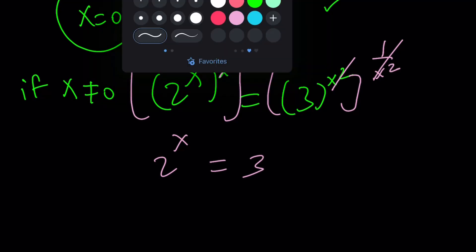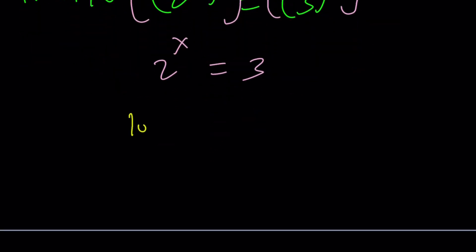At this point, I'm going to log both sides with base 2, because our base is 2. By moving the x to the front, we get x times log base 2 of 2, which is 1, equals log base 2 of 3. So that should be the answer.